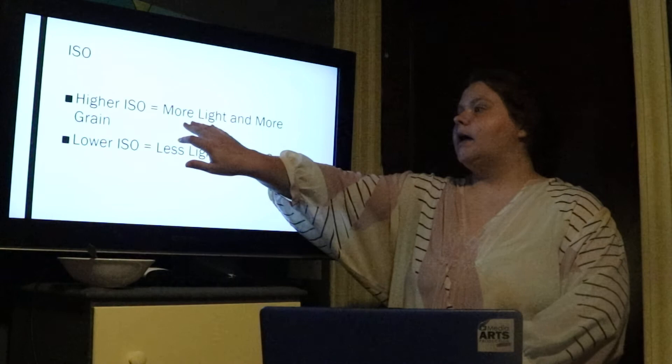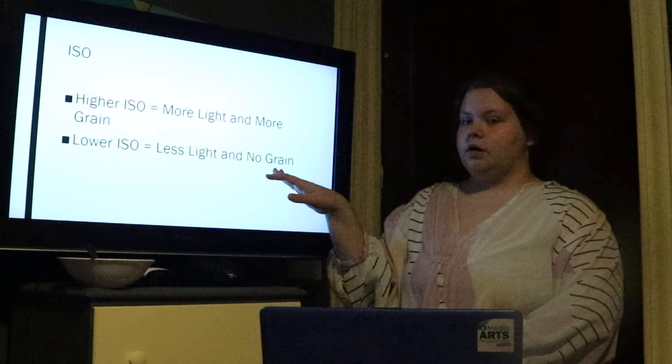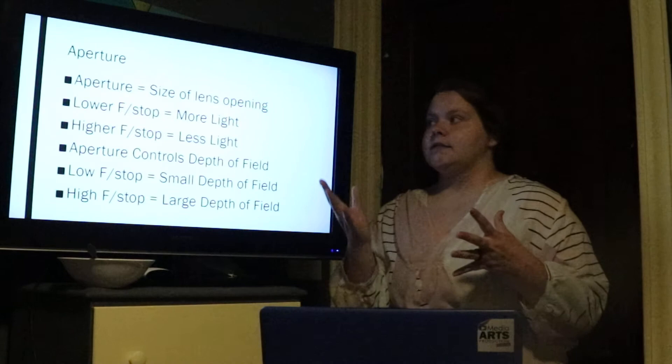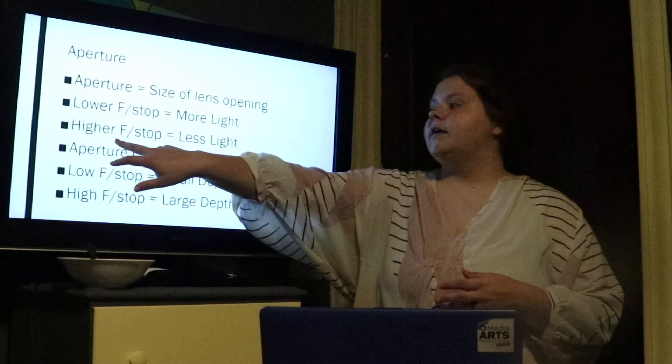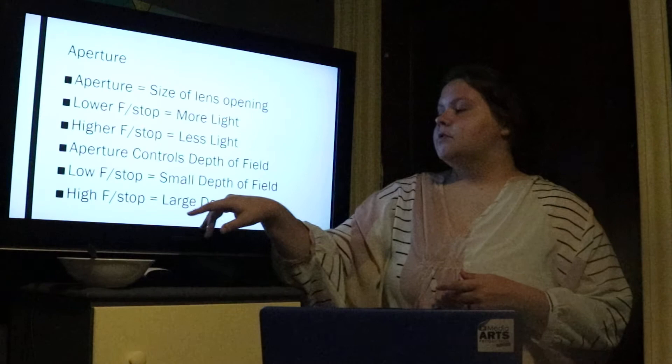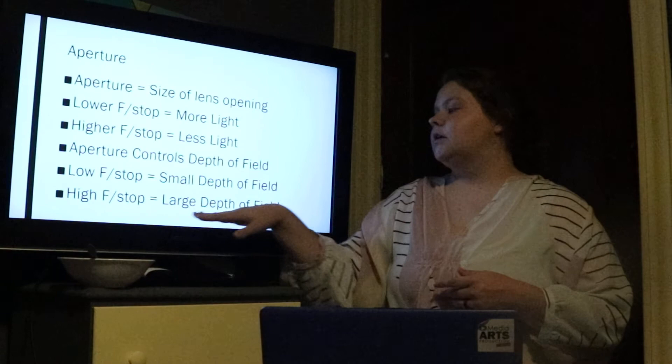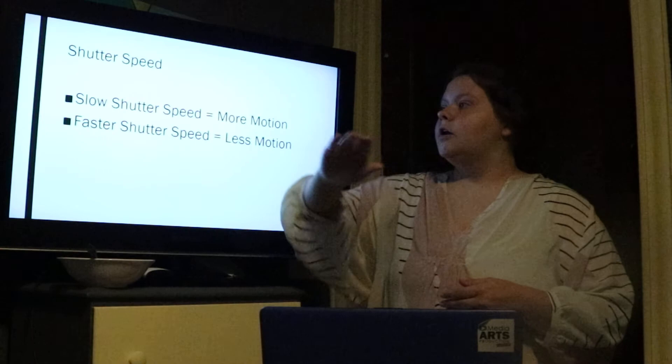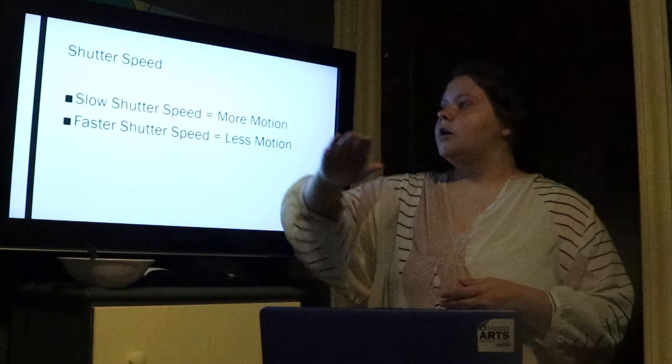Here's a quick overview. The higher the ISO, the more light and more grain; the lower the ISO, the less light but no grain. Aperture is the size of the lens opening — a lower f-stop equals more light, a higher f-stop equals less light. Aperture also controls depth of field: a low f-stop gives a small depth of field, a high f-stop gives a large depth of field. With shutter speed, the slower the shutter speed the more motion you'll see; the faster the shutter speed, the less motion or a completely frozen image. Thank you.